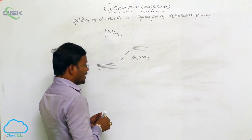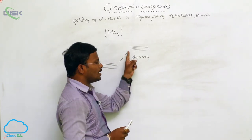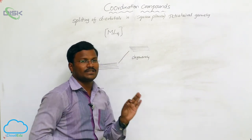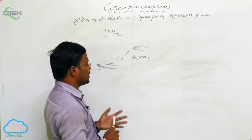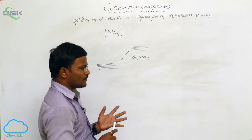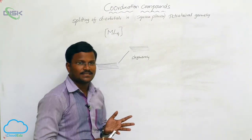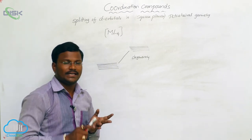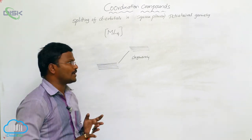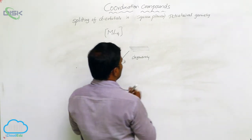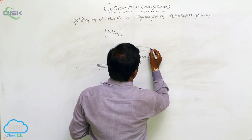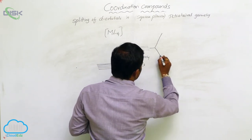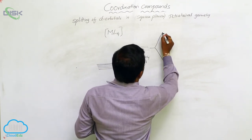Remember, at the degenerate state, all five d-orbitals have the same amount of energy — that is, dxy, dyz, dzx, dx²-y², and dz² orbitals all have similar amounts of energy.